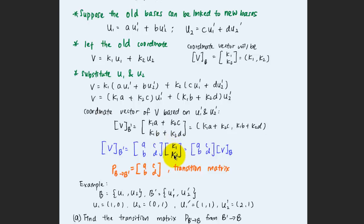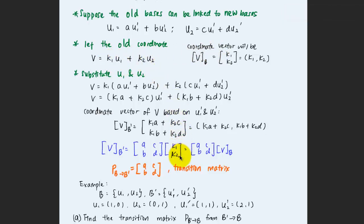This can be simplified as a multiplication of the matrix [a, b; c, d] with the old coordinate vector [k1; k2]. We know k1, k2 is the old coordinate vector, so the new coordinate vector equals the matrix [a, b; c, d] multiplied by the old coordinate vector. This matrix [a, b; c, d] is known as the transition matrix, which transforms the coordinate from the old basis to the new basis.